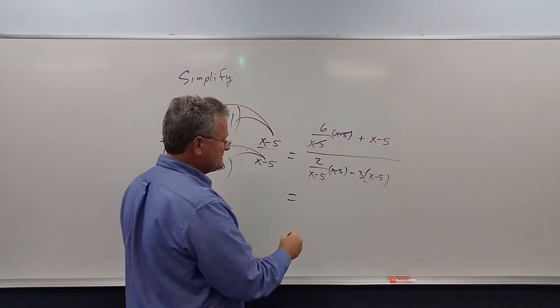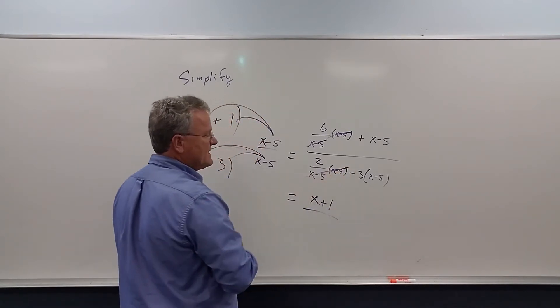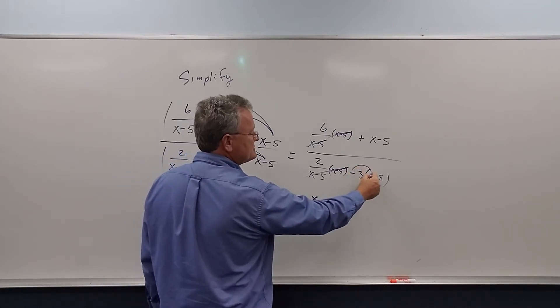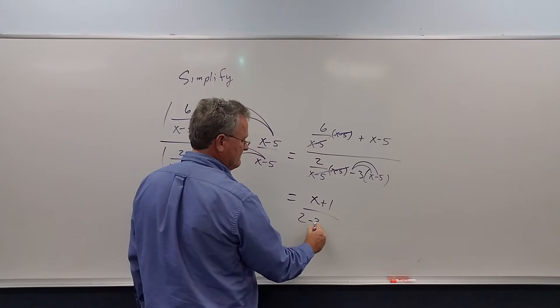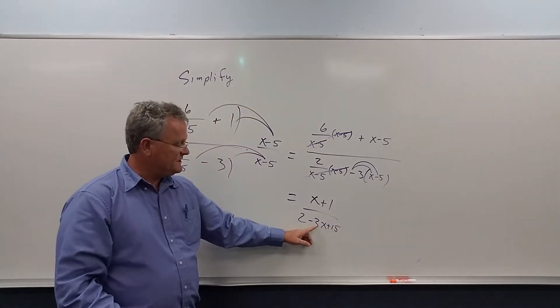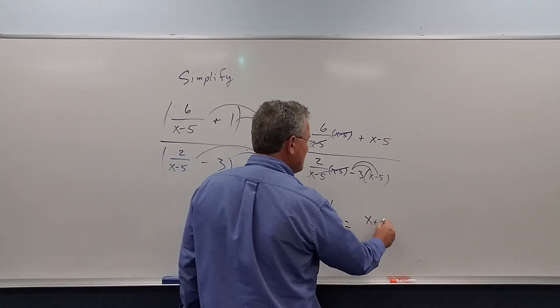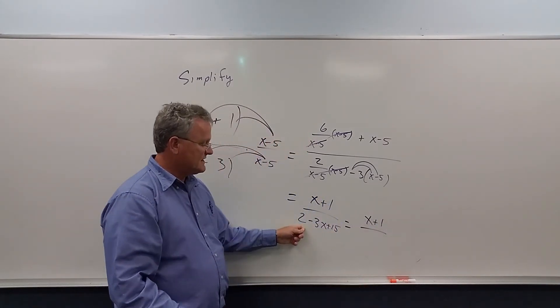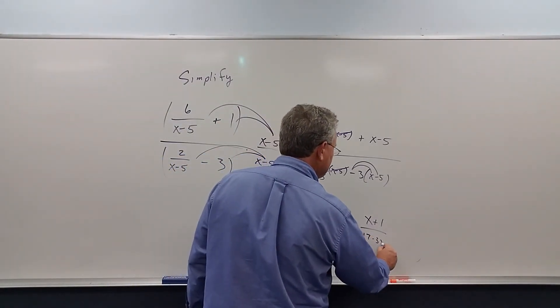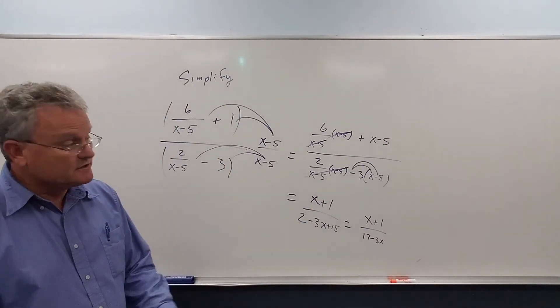Here these cancel. Then we get 2 minus 3x plus 15. 15 and 2 is 17, so we get x plus 1 over 17 minus 3x. That is our simplified answer.